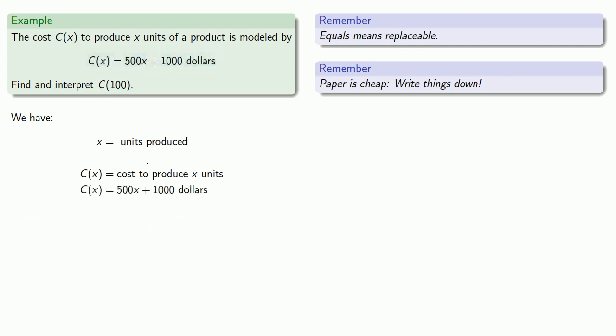Now we want to say something about c(100). So let's write that down. And the first thing to recognize here is that we replaced x with 100. And remember, equals means replaceable, and so that means every time we see an x, we can replace it with a 100. So let's replace this x with 100, and everything else stays the same, so 100 is equal to the units produced.